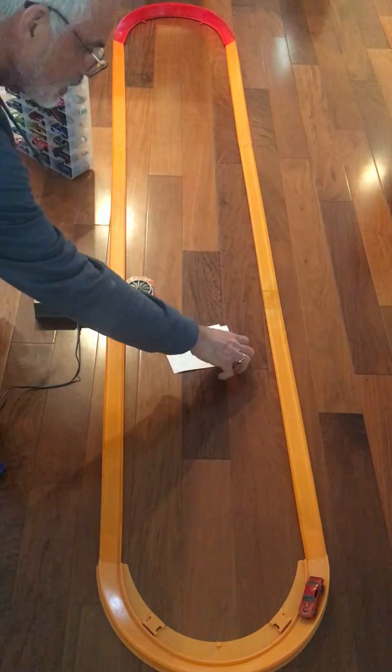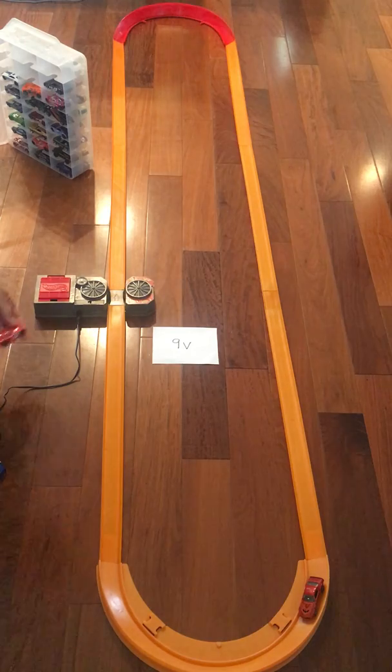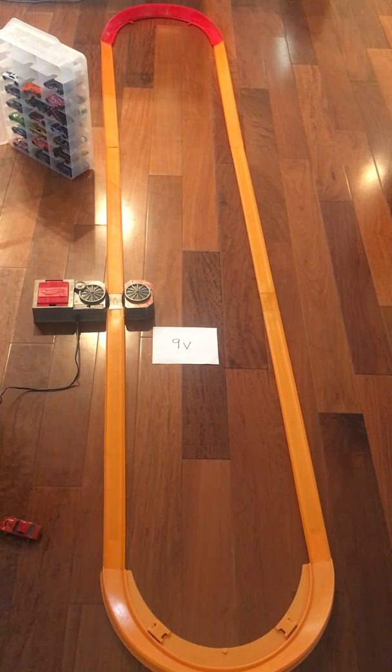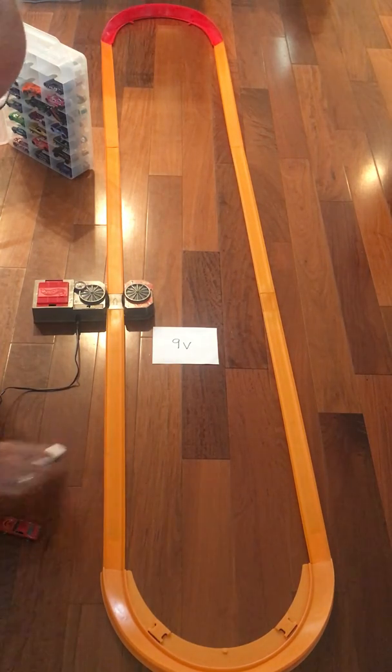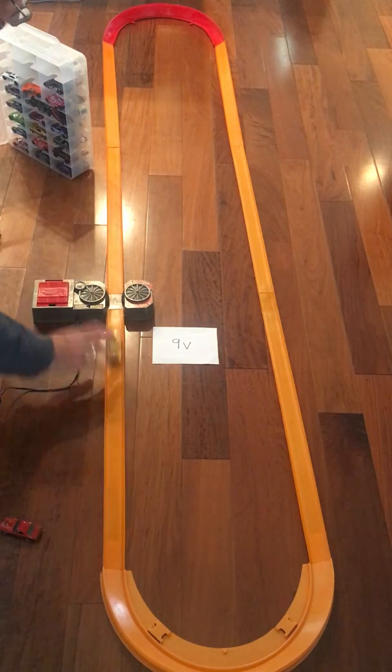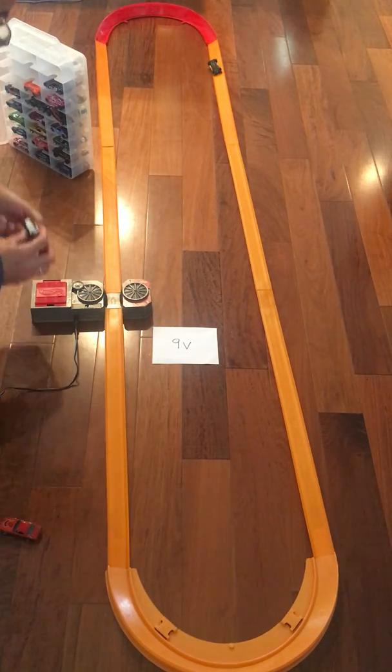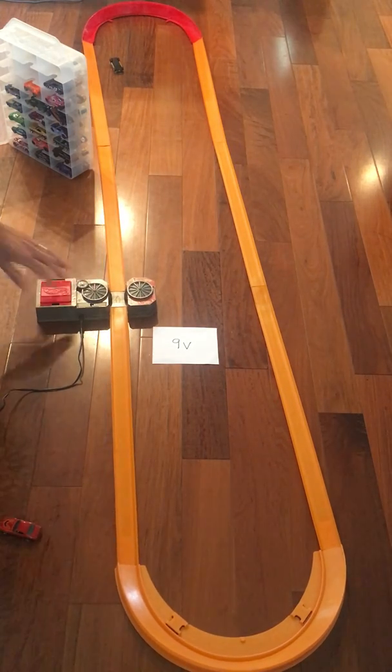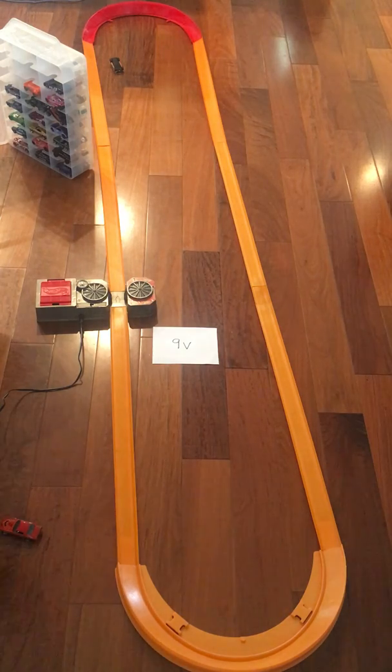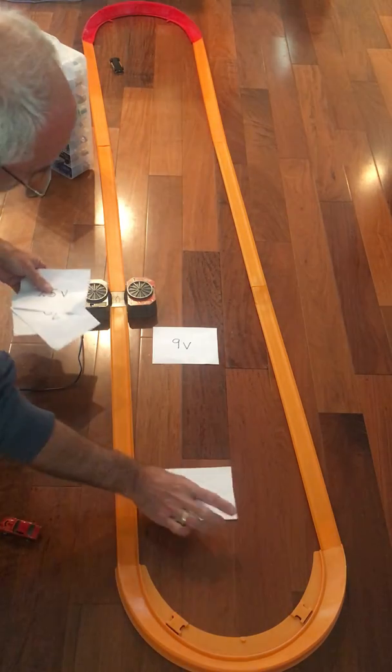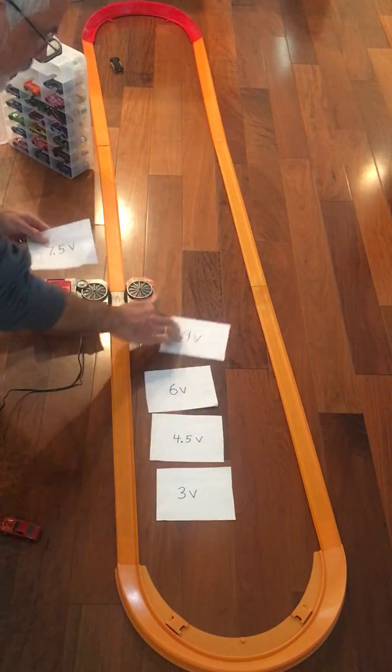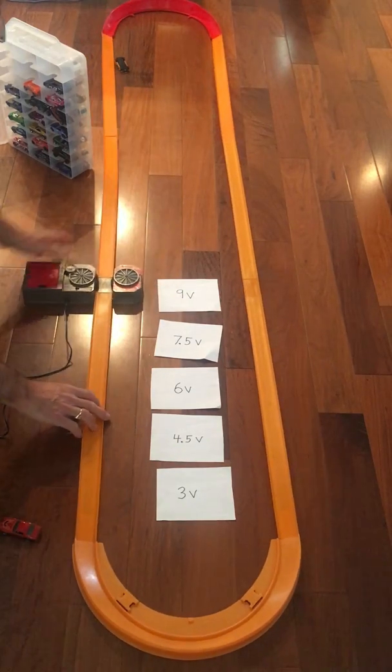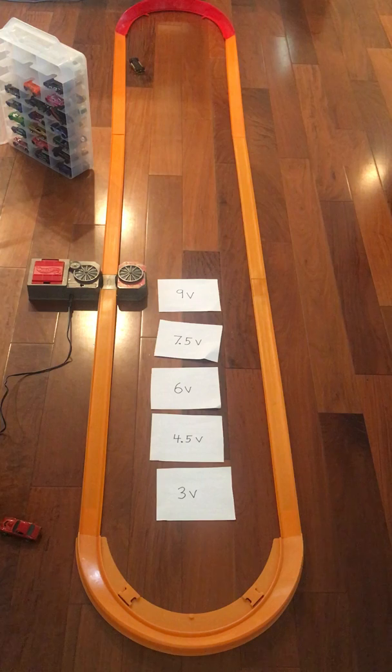And now all the way up to 9 volts. So there you can see the result of running it up from 3 to 4.5 to 6. And you can see that at 9 volts, it was way too powerful for this track setup, throwing the cars off the track.